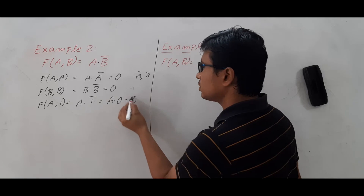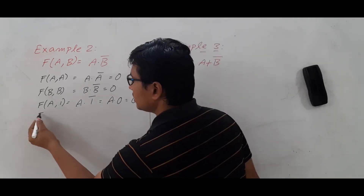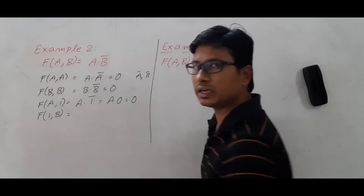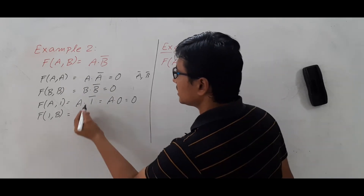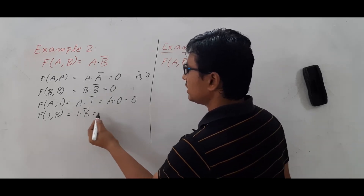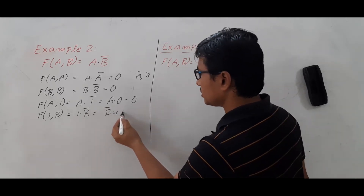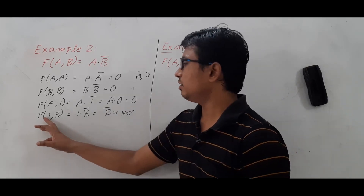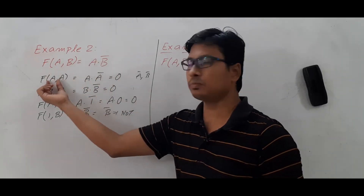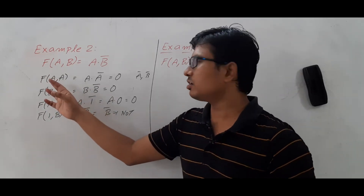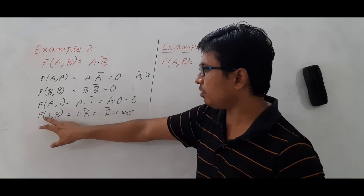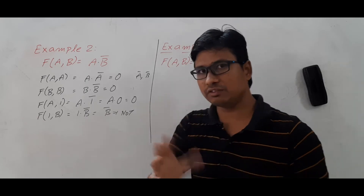Now let's try f(1, b): putting 1 in place of a and b in place of b. The expression becomes 1 AND b-complement, which gives b-complement. So I got NOT! However, I obtained NOT with the support of the constant 1 — not using binary variables alone. So with f(1, b) I can produce NOT, but it requires the constant 1.